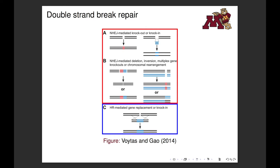This is shown in Part A of the diagram. These small changes can result in a frameshift mutation that results in a loss of function of the gene. Other changes, like large deletions, inversions, and translocations, can also be achieved in non-homologous end joining, as shown in Part B of the diagram.